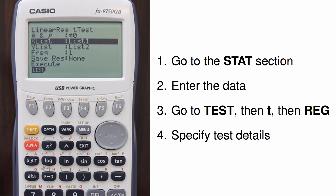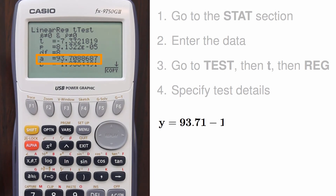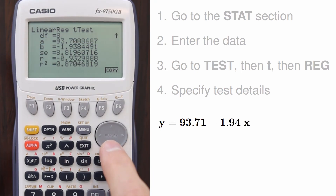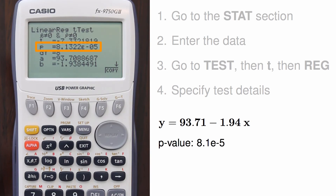I can hit the execute key to get the test results. The output shows the alternative hypothesis, the t-test statistic, the p-value, the degrees of freedom for the test statistic, the y-intercept, the slope, and some additional statistics. The p-value is 8.1e-5, which is about 0.000081, so I reject the null hypothesis.